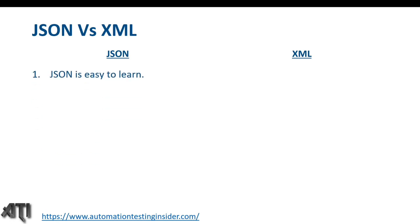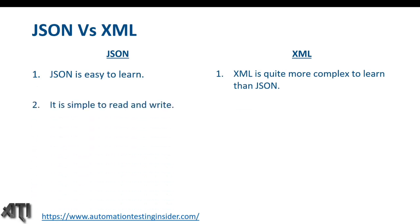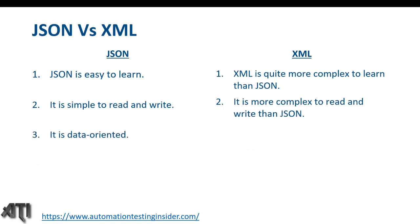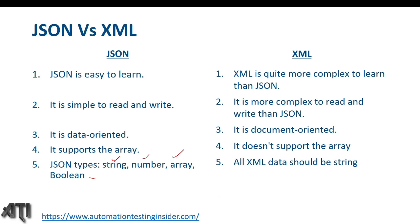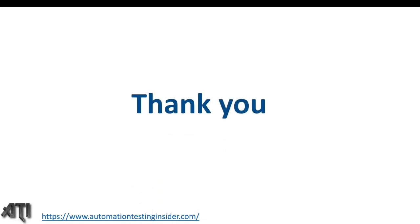Differences between JSON and XML: JSON is easy to learn while XML is more complex. JSON is simple to read and write; XML is more complex. JSON is data-oriented; XML is document-oriented. JSON supports arrays; XML does not. JSON types are string, number, array, and boolean; all XML data should be string. That's all for today — please subscribe if you're new to the channel. Thank you for watching!